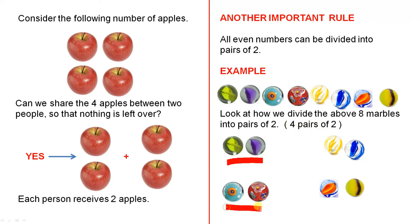One pair, two pairs, three pairs, four pairs. Altogether there are eight marbles all grouped into pairs and there's nothing left over which tells us that eight is an even number.